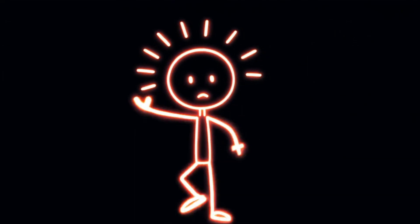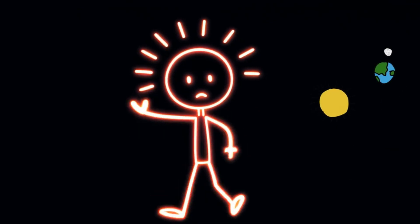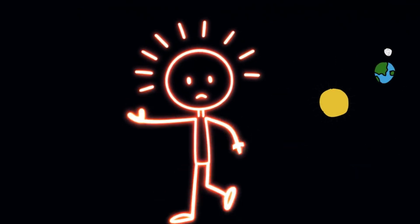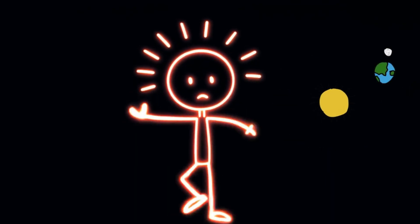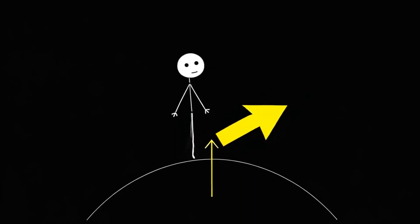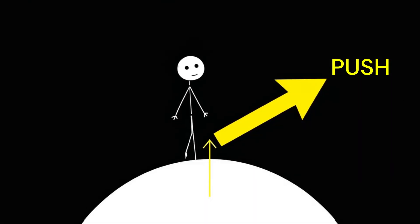It's a question that breaks your brain the moment you think about it. Because everything we know, from the way we stand to the way planets orbit, depends on gravity pulling things inward. So what happens if that force flips? Let's imagine this alternate universe where, instead of pulling you down, gravity pushes you away from Earth.